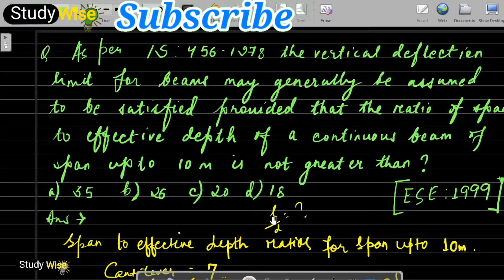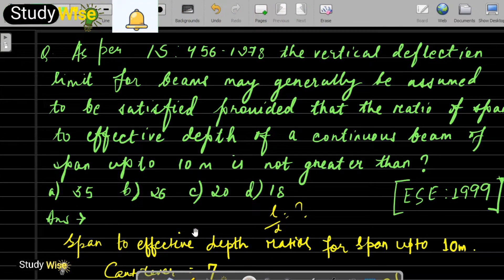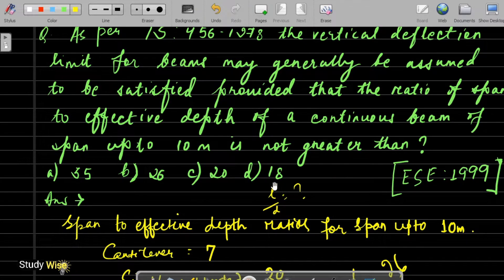The ratio of span to effective depth is asked for continuous beam. So before finding the answer, these are some given values for span up to 10m.